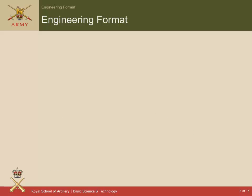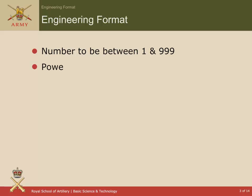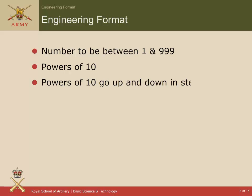When you use engineering format, the number must be between 1 and 999. It can have a decimal part. It will then be multiplied by a power of 10 if necessary, and the powers of 10 must go up and down in steps of 3.